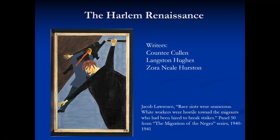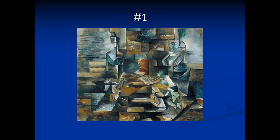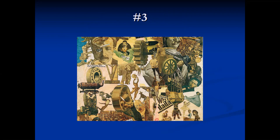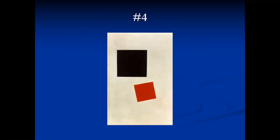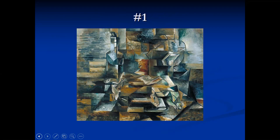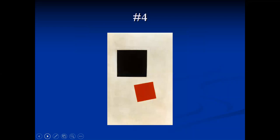Now let's review your ability to identify some of the major art styles from the early 20th century. Number a scrap sheet of paper from one to five and see if you can identify the styles of each work. Number one. Number two. Number three. Number four. And number five. And now for the answers: Number one — Cubism. Number two — Surrealism. Number three — Dada. Number four — Non-objective art. Number five — Fauvism.